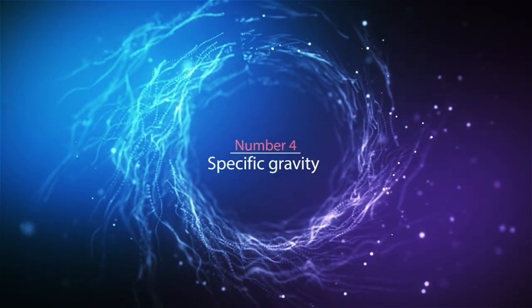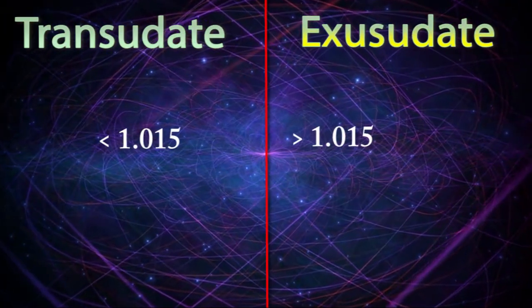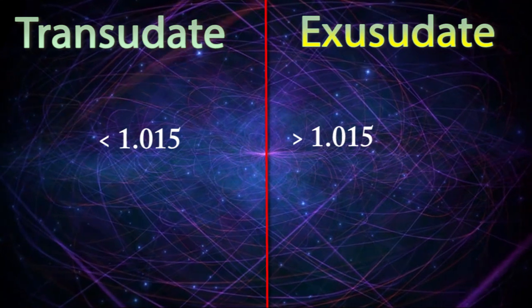Difference number four: specific gravity. Transudate specific gravity is usually less than 1.015, but exudate always takes higher specific gravity values.